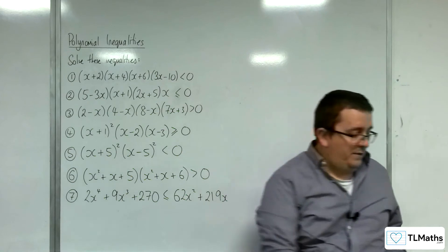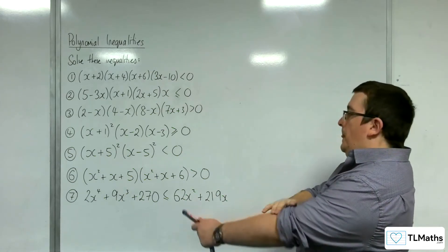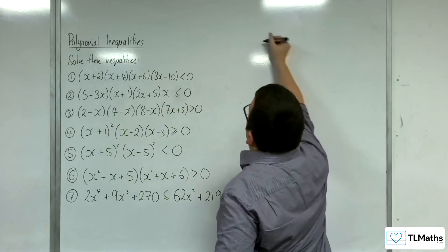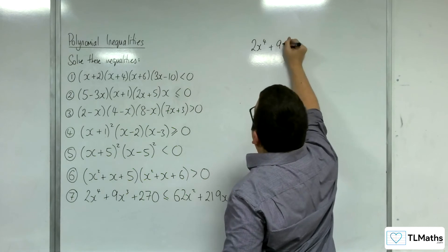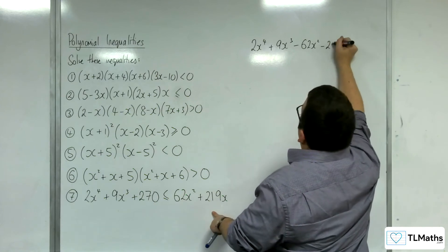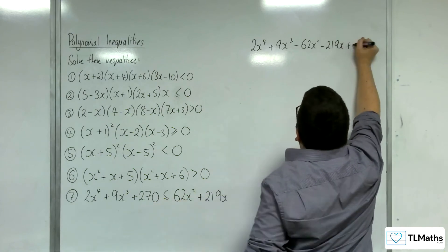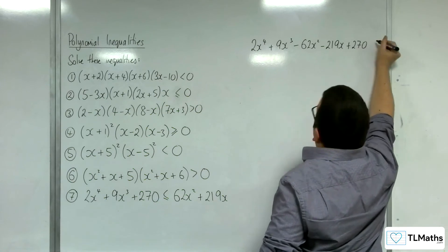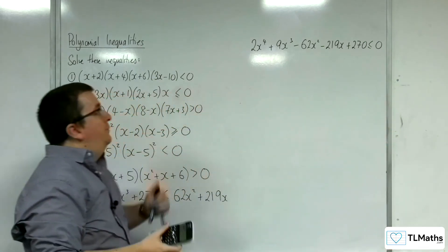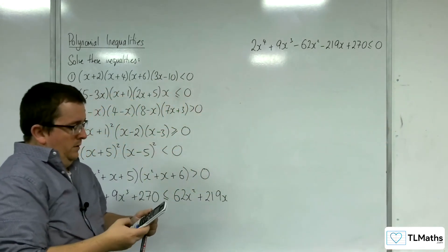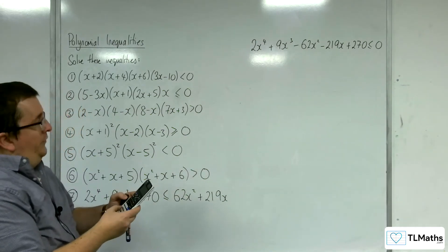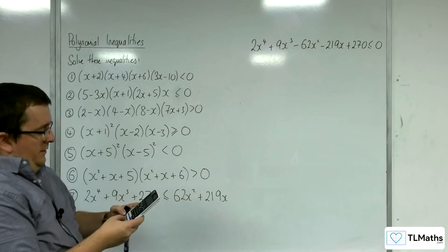Number 7. The first thing is to rearrange to get everything onto the left-hand side: 2x to the 4 plus 9x cubed minus 62x squared minus 219x plus 270 is less than or equal to 0. Now I'm going to put that through my quartic solver — polynomial degree 4, coefficients 2, 9, minus 62, minus 219, and 270.